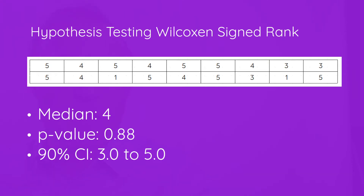Using the Wilcoxon Signed Rank Test, the median is 4. We get a p-value of 0.88 on our hypothesis, which shows there is no significant reason to believe the average is different from 4. We get a confidence interval of 3 to 5 — specifically a 90% confidence interval. With non-parametric studies, it's sometimes difficult to get the exact confidence interval you want, but we can be 90% sure the true average on this Likert scale question is between 3 and 5.